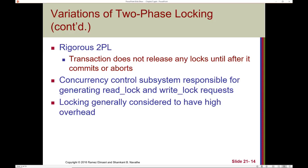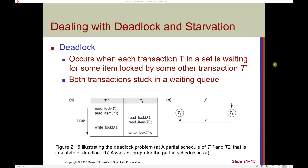Locking is generally considered to have high overhead in concurrency control. A state we want to avoid at all costs is deadlock, which occurs when each transaction is waiting for some item that's locked by another transaction — everybody is stuck in a waiting queue, and no one can get access to the resources they need.